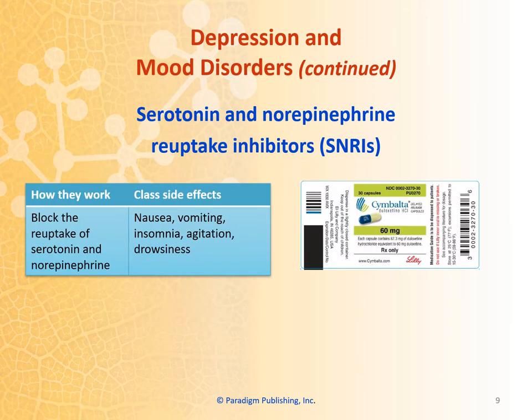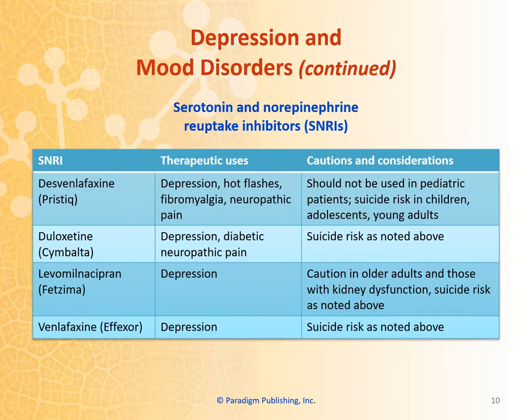Serotonin and norepinephrine reuptake inhibitors, or SNRIs, block the reuptake of serotonin and norepinephrine. One example of an SNRI is Cymbalta. The class side effects include nausea, vomiting, insomnia, agitation, and drowsiness. Some more examples of SNRIs include Pristiq, Cymbalta, Fetzima, and Effexor.